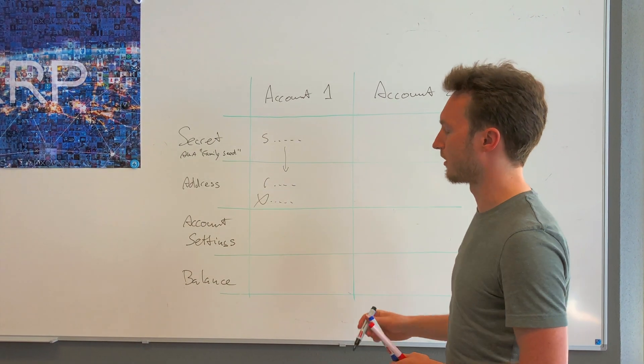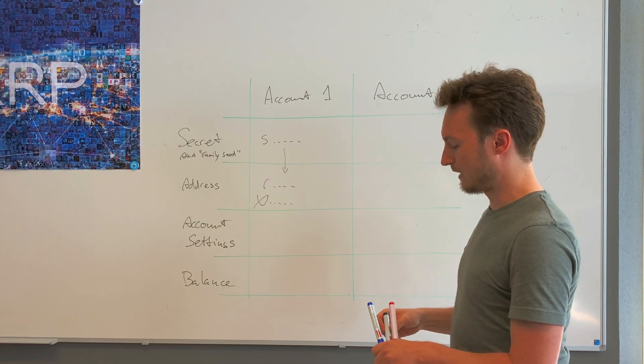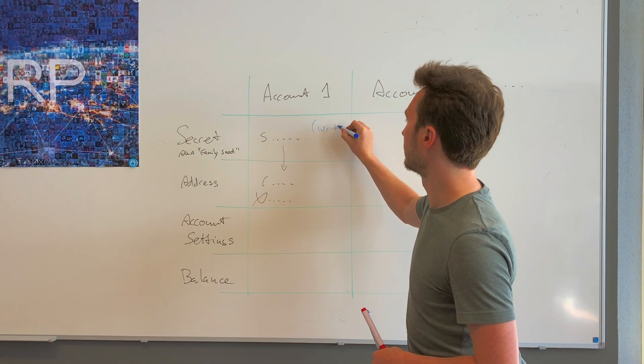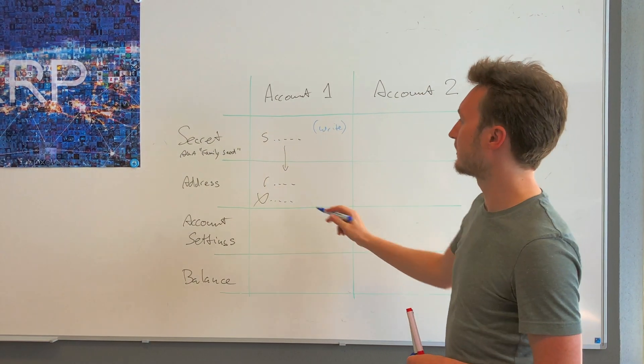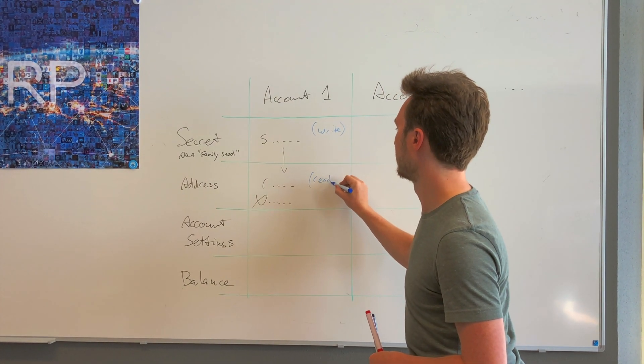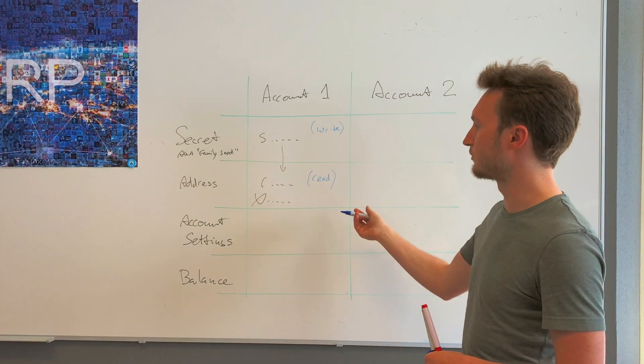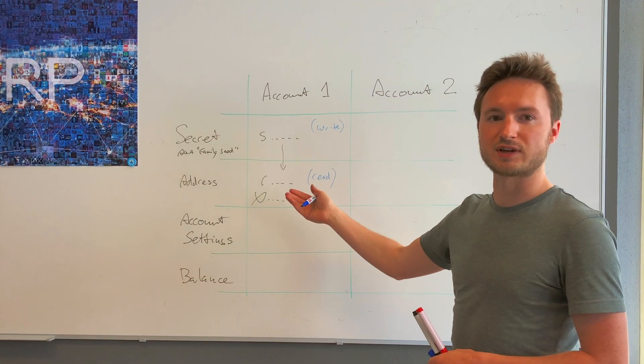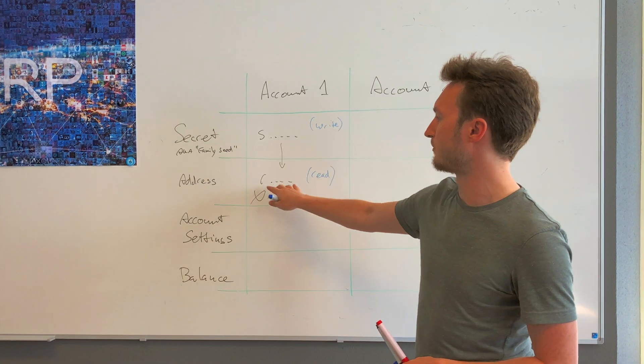The 's' address can be used to write on the XRP ledger, and the 'r' address can be used to read transactions. If you go to an explorer like Bithomp or XRPScan, you can find all the transactions of a specific account by the 'r' address.